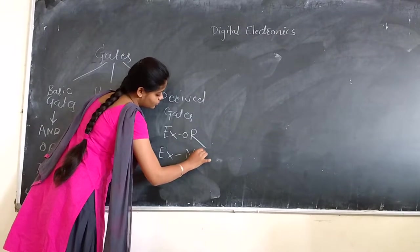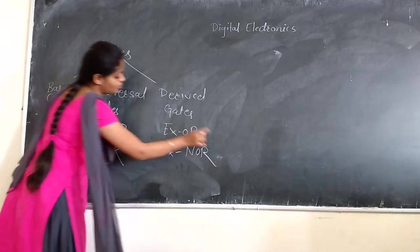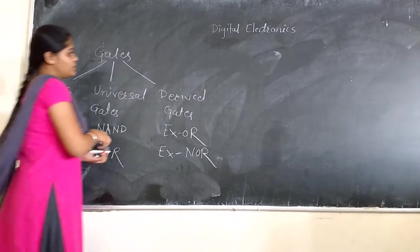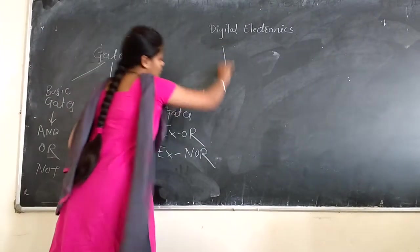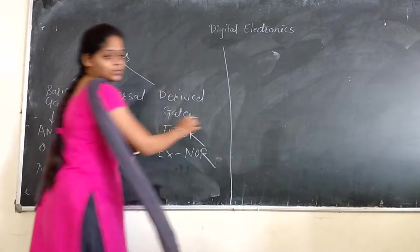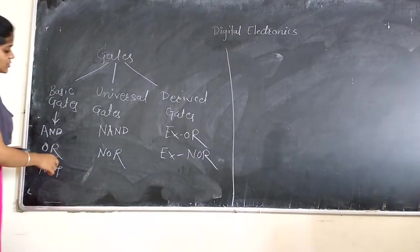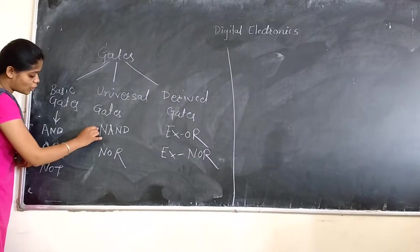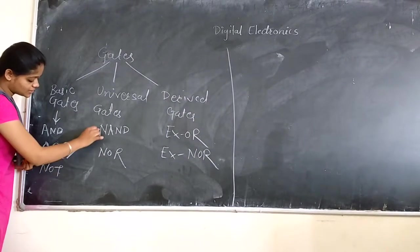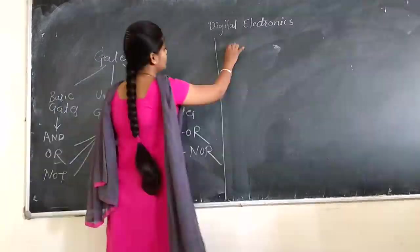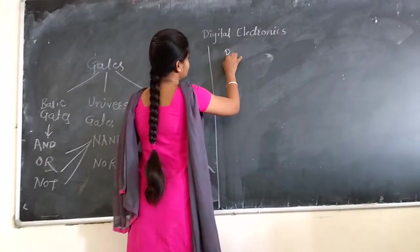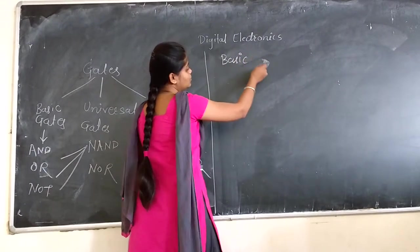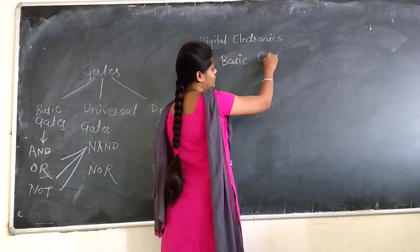Now what is the meaning of universal gate and derived gate? From universal gates we can derive all basic gates. First of all we will discuss basic gates.